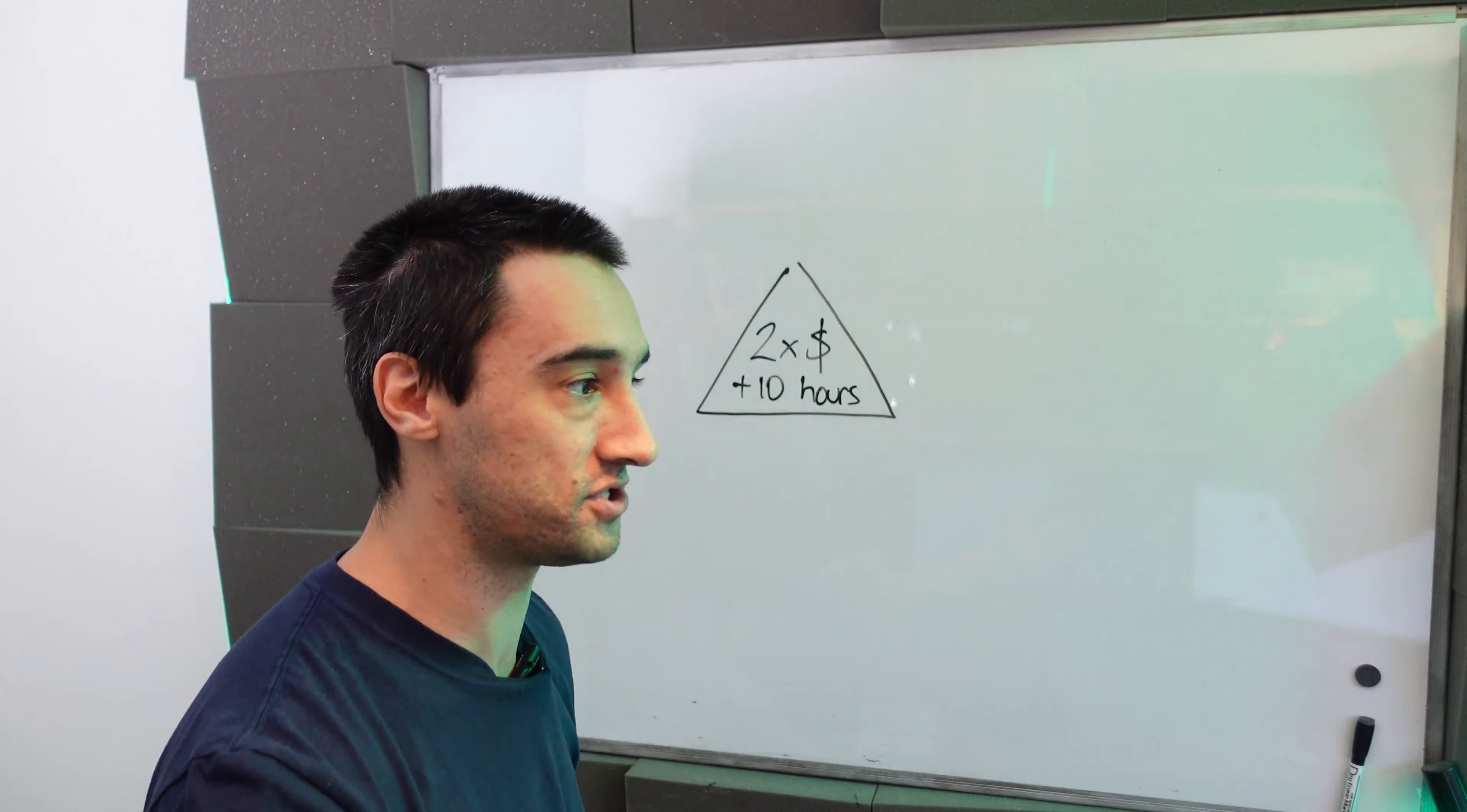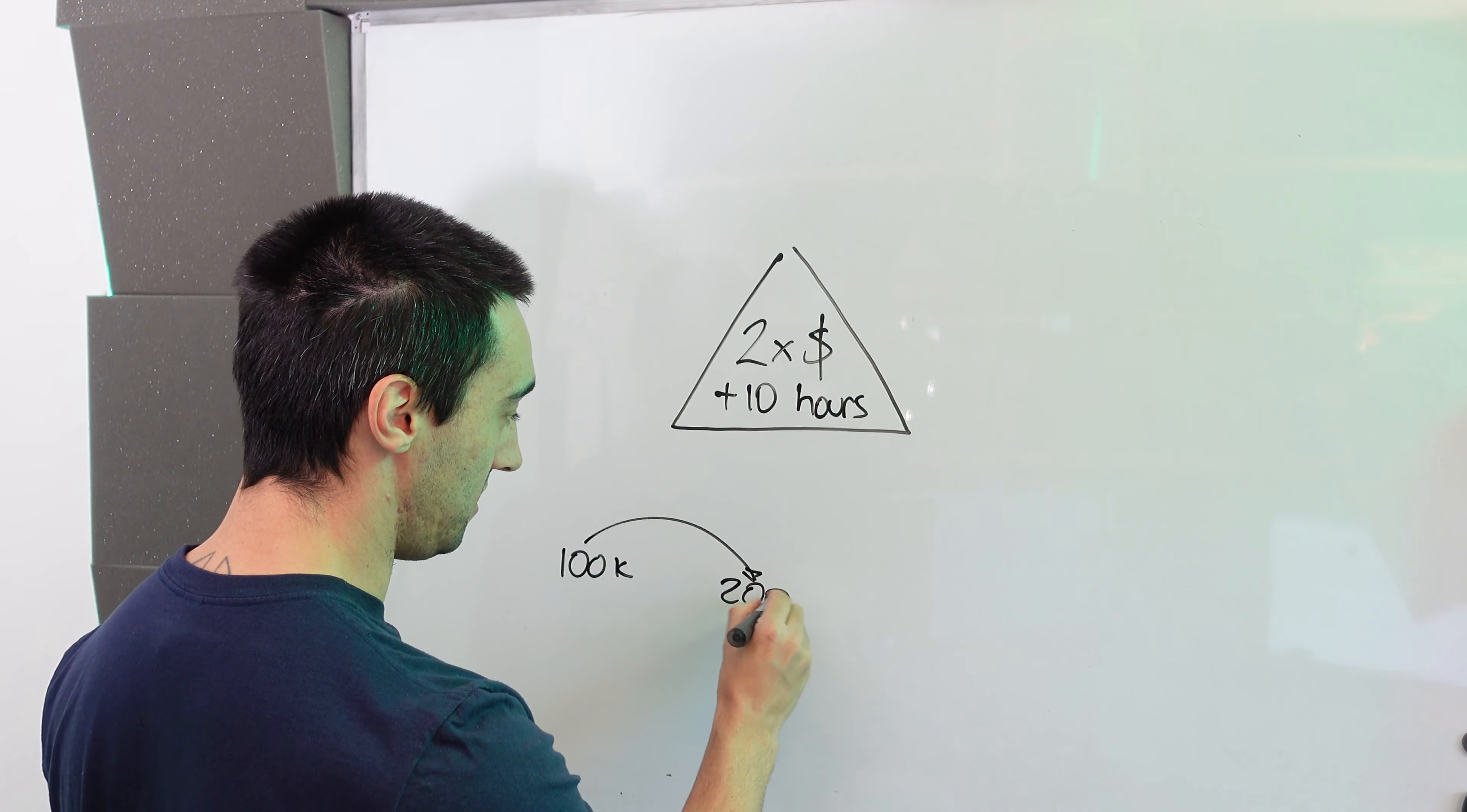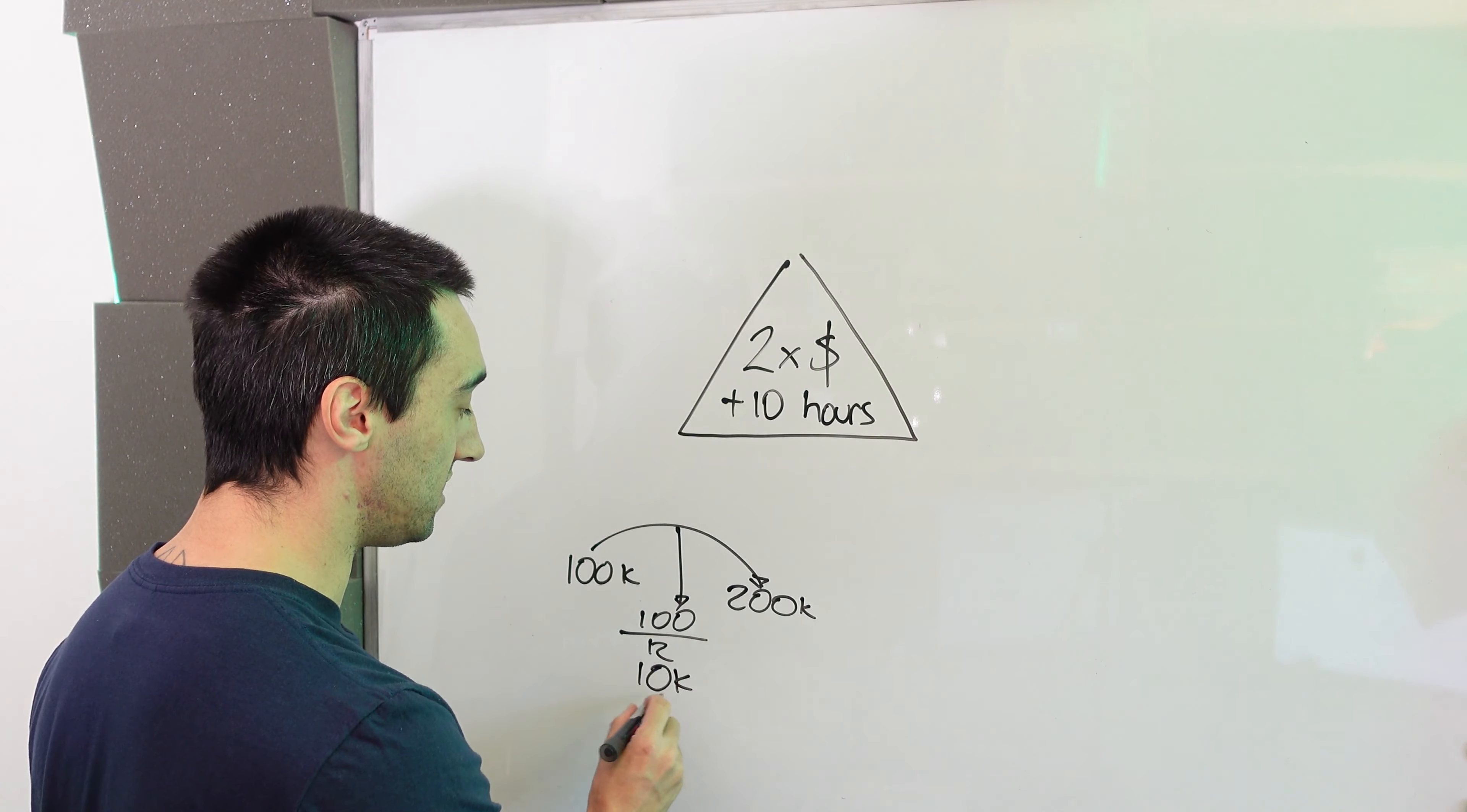So let's say that you are currently at a hundred grand. My job is to get you to 200 grand. For example, a hundred thousand divided by 12 is just under 10K. But for the sake of ease, we'll call it 10K.